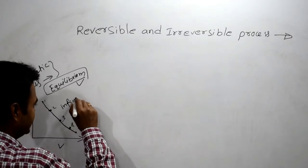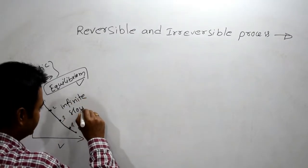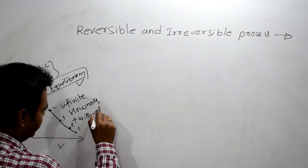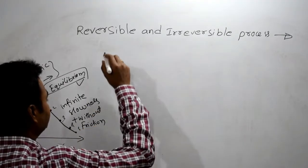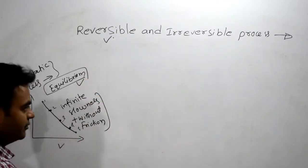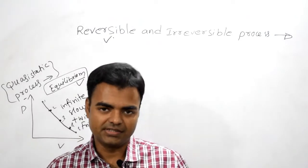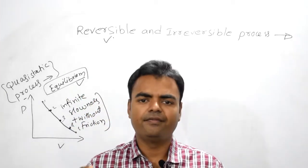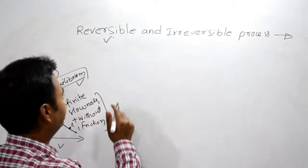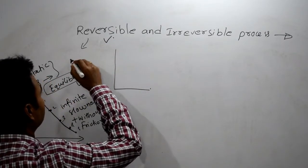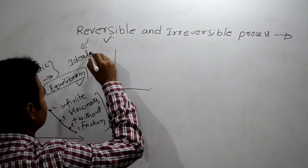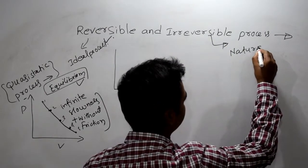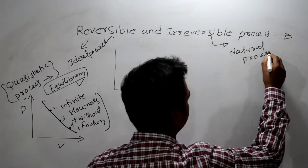Quasi-static process has infinite slowness as its characteristic. If we add the condition of no friction — without friction — then we say the process is a reversible process. A reversible process is also known as an ideal process, while an irreversible process is also known as a natural process.